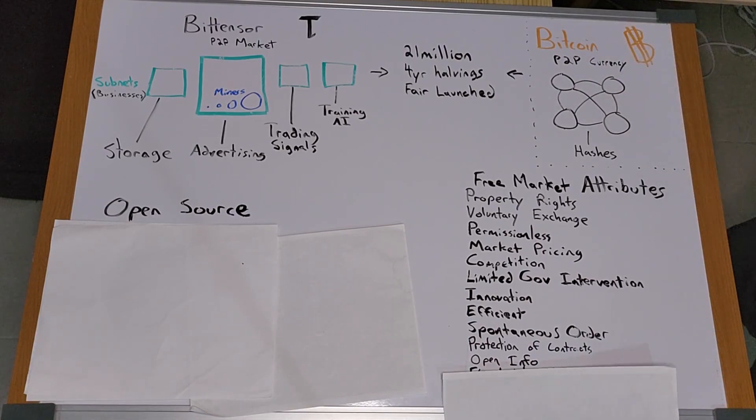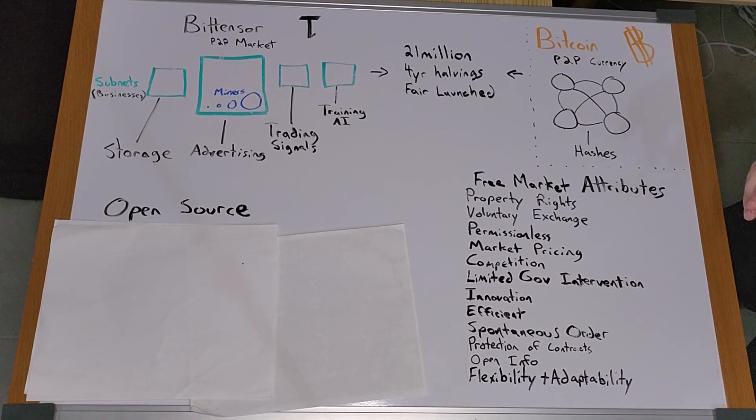To me, that's wild. Flexibility and adaptability. Thanks to the permissionless nature of BitTensor, the network is able to adapt quickly to changes in supply and demand, technology, and other factors, allowing it to respond to new opportunities and challenges quickly.